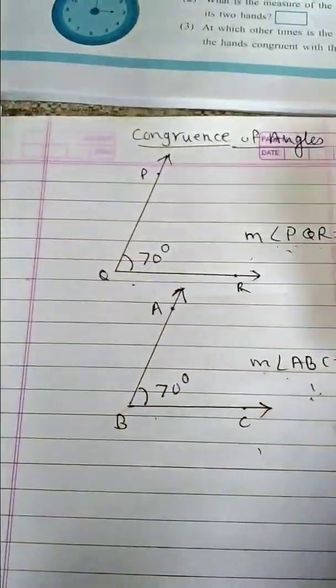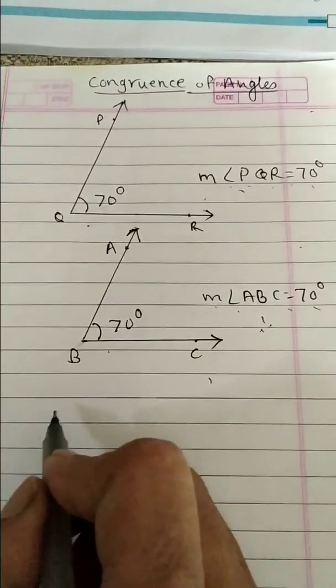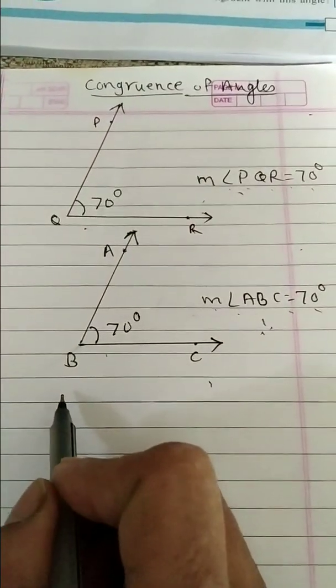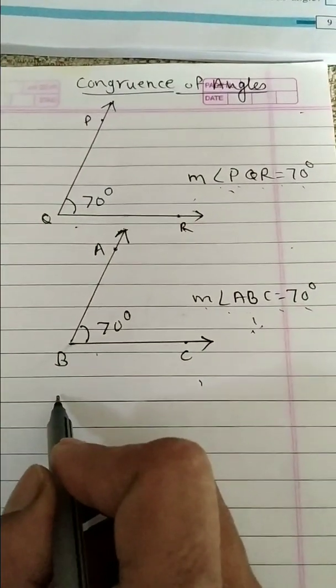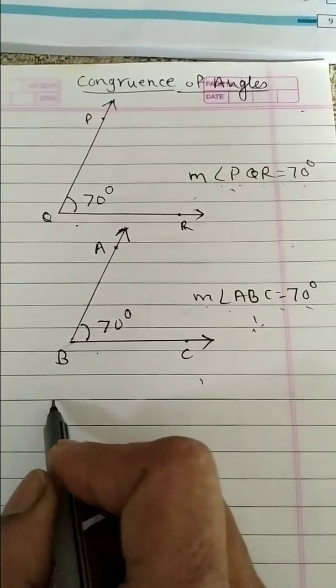Then we say that when two angles have equal measures, both angles are congruent to each other.